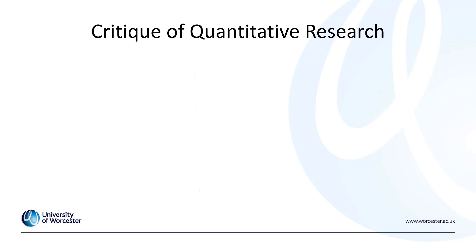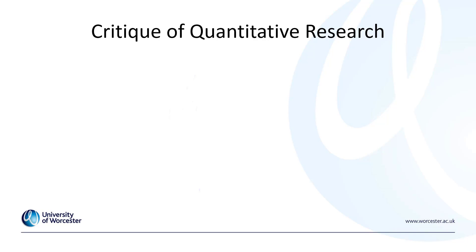There are criticisms of quantitative research. Firstly, quantitative research fails to distinguish people and social institutions from the world of nature. This means it often treats people and social institutions similarly to the natural world of science and physics, and it doesn't look at the interrelationships and the complex nature of people, social institutions, and their interactions.